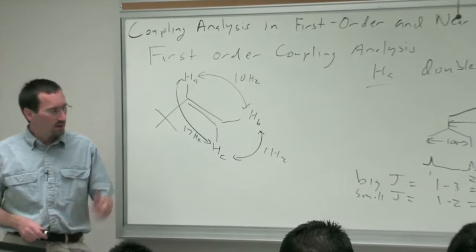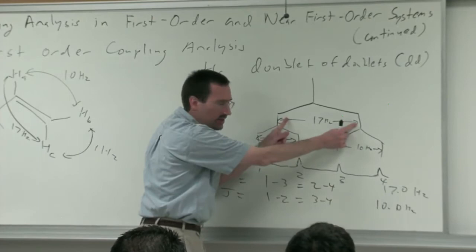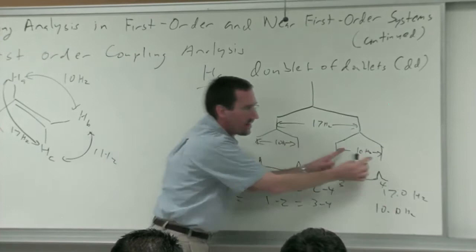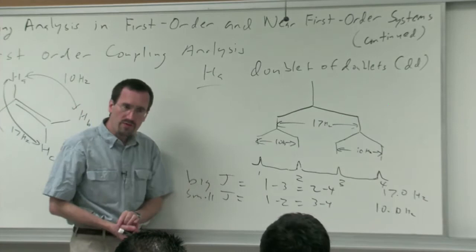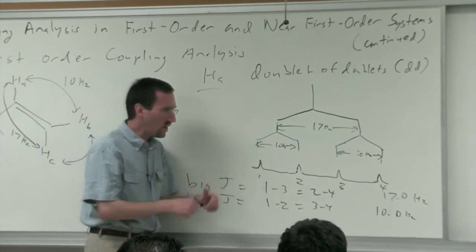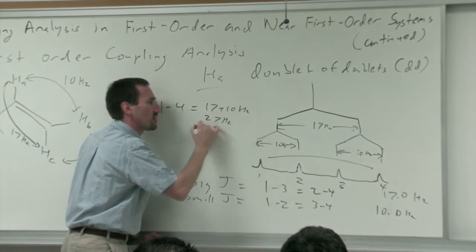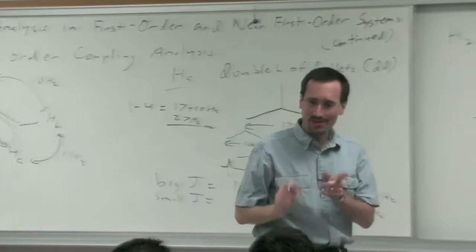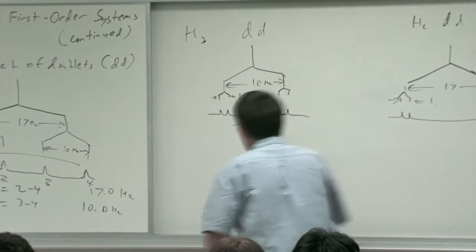A student asks: is the 17 hertz the distance from line 1 to line 4? The distance from 1 to 4 is going to be 17 plus 10 hertz, which is 27 hertz. You've hit upon a super important point: the difference between the first line in a multiplet and the last line is the sum of all of the J's - with all of their multiplicities built in.